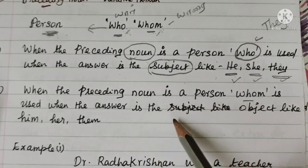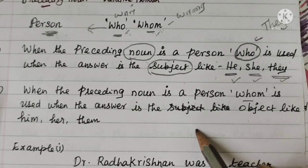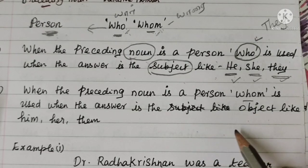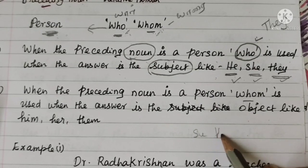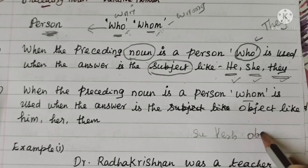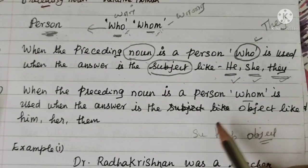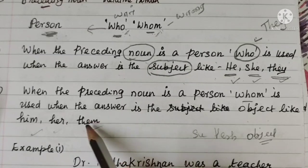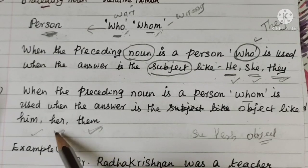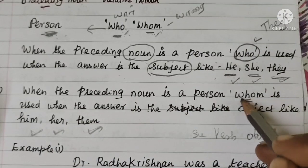When the answer is an object pronoun — him, her, them — the relative pronoun 'whom' is used. So the structure is: subject, then verb, then object. When the answer to the question is an object pronoun, we use 'whom'.